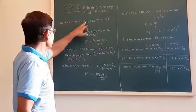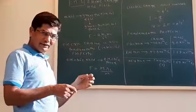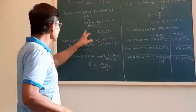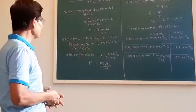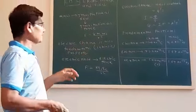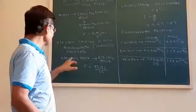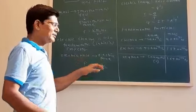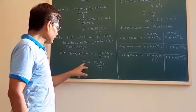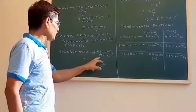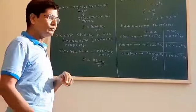In the 11th standard we saw about the gravitational field and the gravitational force. The formula was G·m1·m2 upon R square. Similarly, we have to see about the electric charge which produces electric field, and the formula will be similar: F is equal to K·Q1·Q2 upon R square.